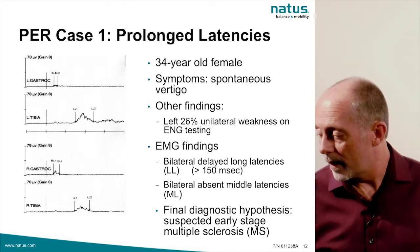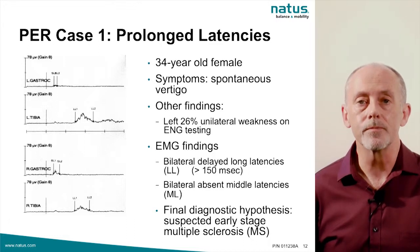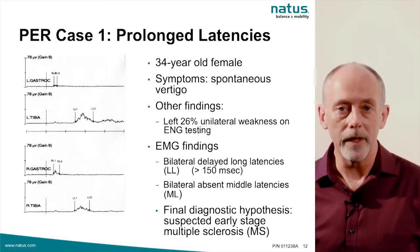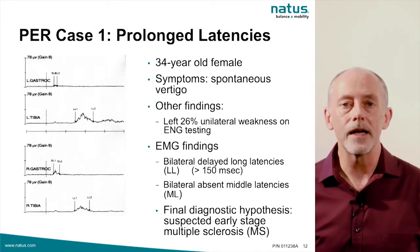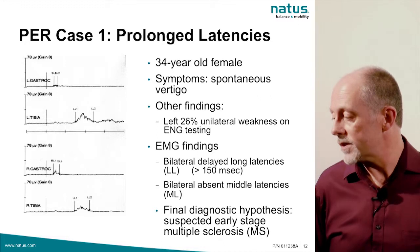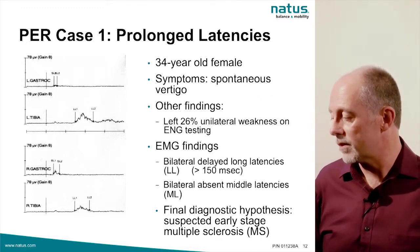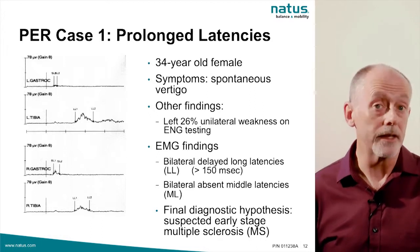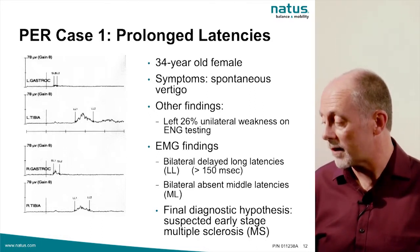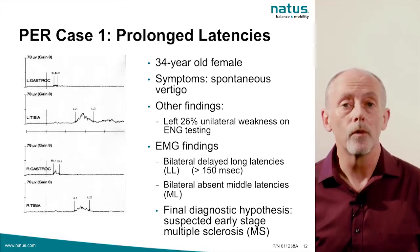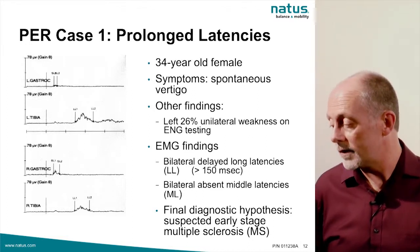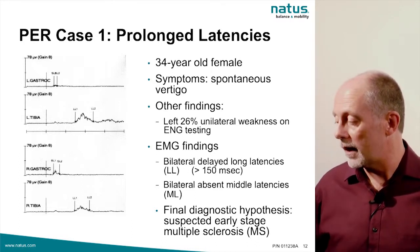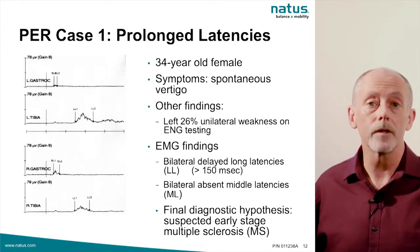Primarily what we look for in our patient population is prolonged latencies. The pattern of prolonged latencies — whether it's the short, medium, or long latency responses — provides diagnostic information about pathology within the system. This is a 34-year-old female whose complaint is rotational vertigo but also had some central nervous system findings we wanted to investigate further. The Postural Evoked Response Test found that the long latencies were prolonged, an indicator for central nervous system involvement. She also had absent middle latencies — another indicator of CNS involvement — and the final diagnosis was early multiple sclerosis.